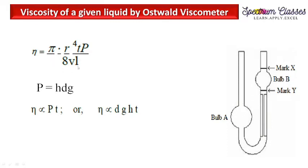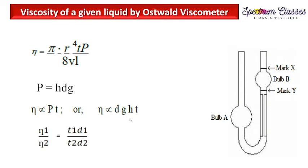Since r (radius), V (volume), and l (length) are all constant for a given Oswald viscometer, viscosity is proportional to p × t. Substituting p = h·d·g, we get: η ∝ d·g·h·t. If we want to determine viscosity absolutely we need all these parameters; otherwise we determine it relative to a known liquid. That is why the aim states we are doing this with respect to water. For liquid 1: η₁ ∝ d₁·t₁ (g and h being constant).